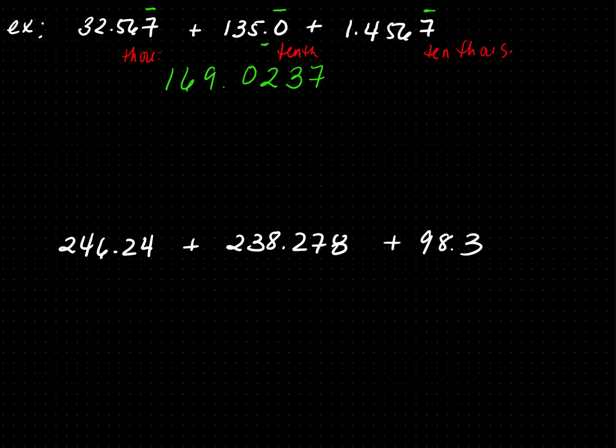The least precise position is the tenths place, so I need to round my final answer to the tenths place. The digit in the tenths is 0; I look one to the right — it's less than 5, so the 0 stays as is. My final answer is 169.0.